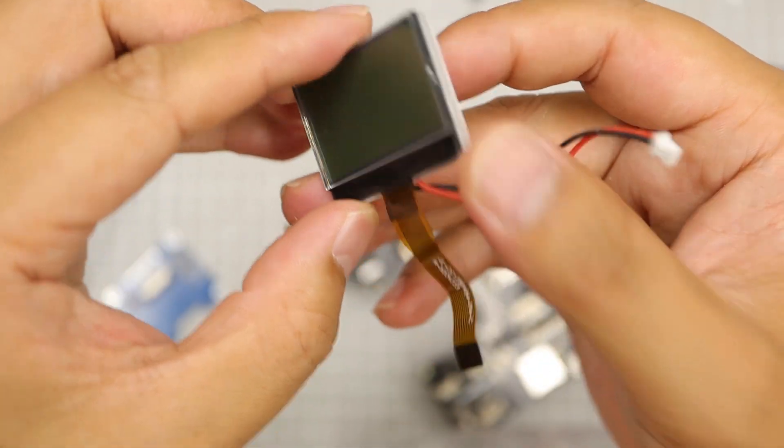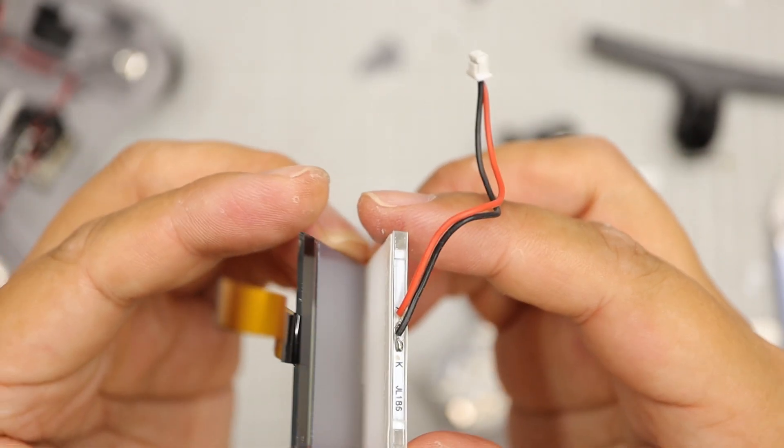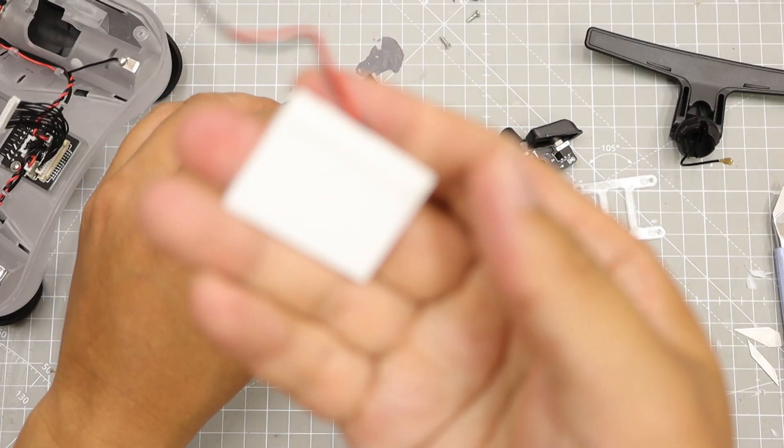And detach backlight unit from original LCD. It is for illumination. Original LCD needs to perform, so don't throw it in the trash can.